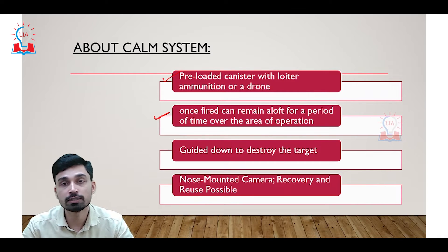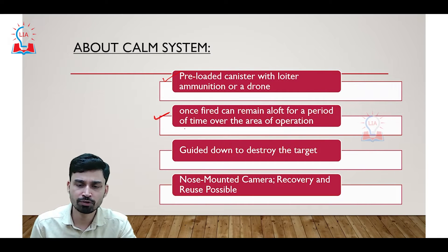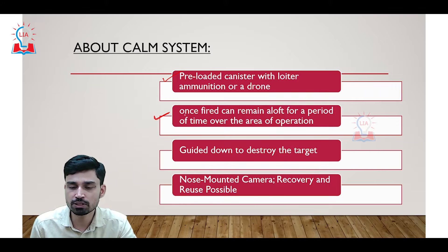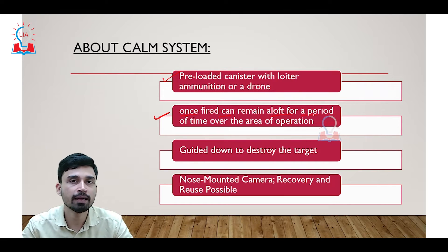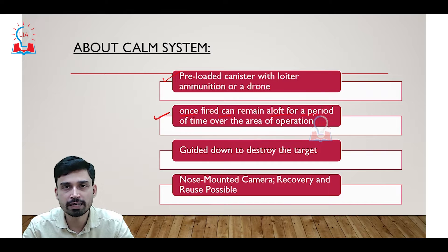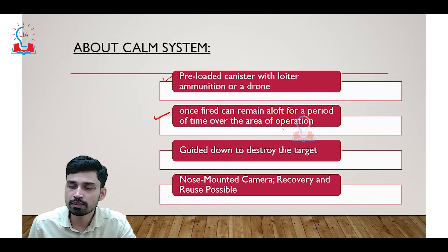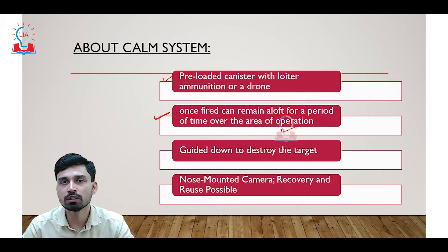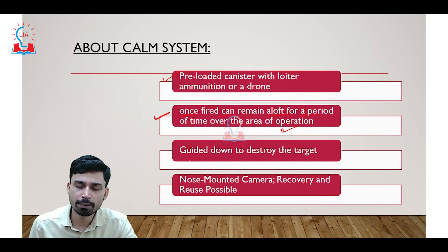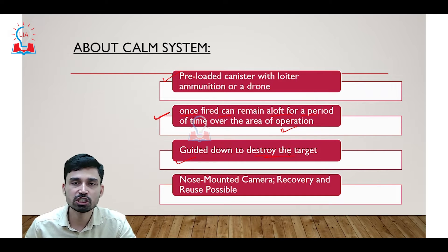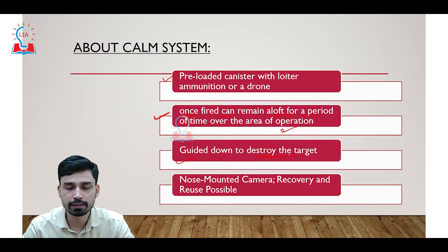The second feature of the CAM system is that once fired, these munitions can remain aloft in the air for an extended period of time over the area of operation. Once a target has been identified, the operator can guide this ammunition — or drone — down to destroy that intended target.